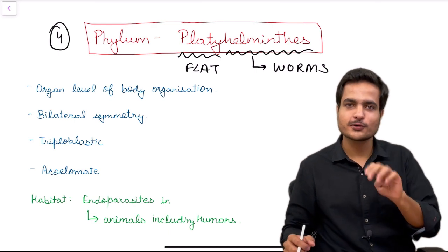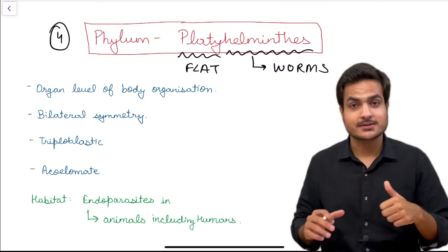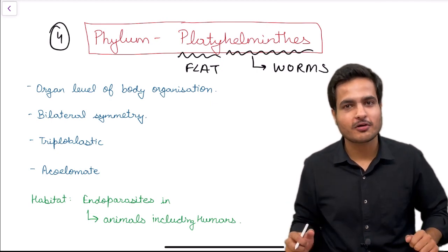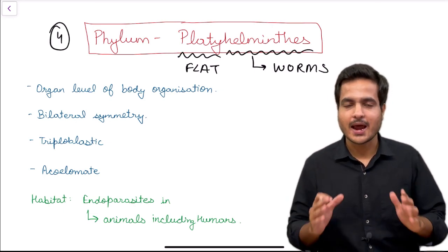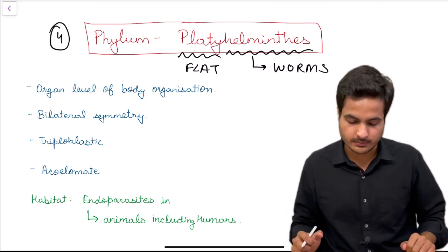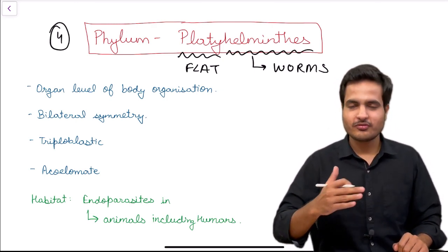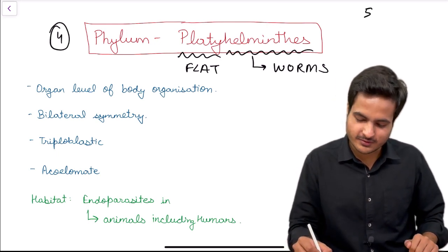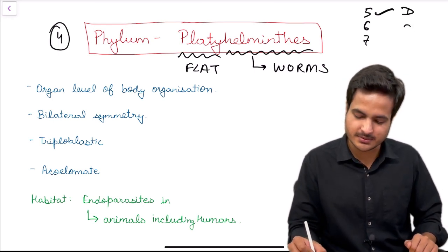Starting with our four golden points: the first one — flat worms have organ level of body organization. This is a characteristic point because only this phylum in our discussion has organ level of organization. The second and third phyla, Coelentrata and Ctenophora, had tissue level; the first phylum, Porifera, had cellular level. From the fifth phylum onwards, everyone has organ system level of body organization.